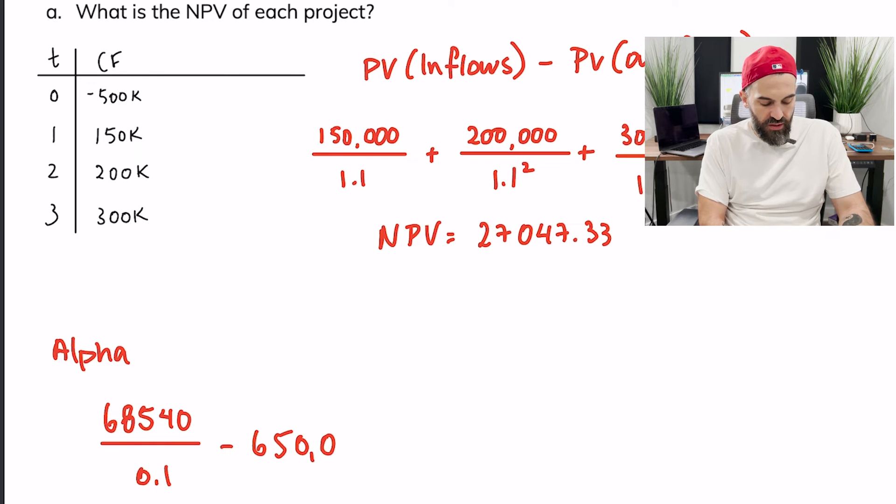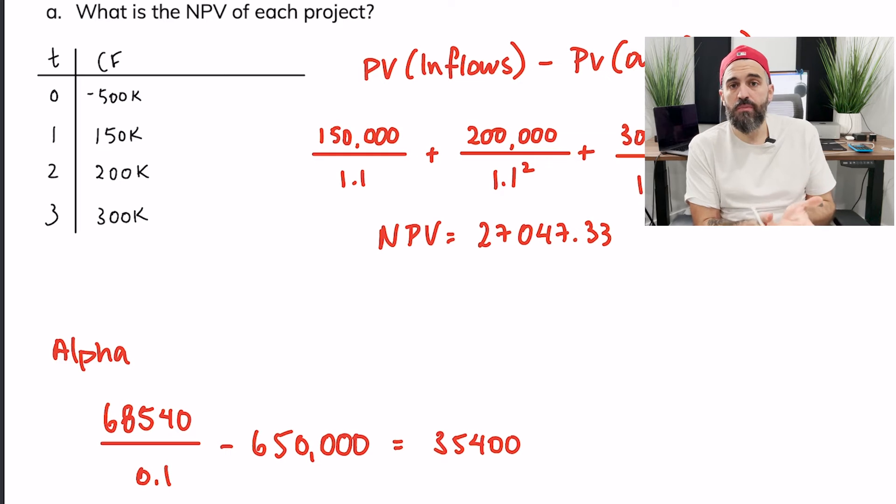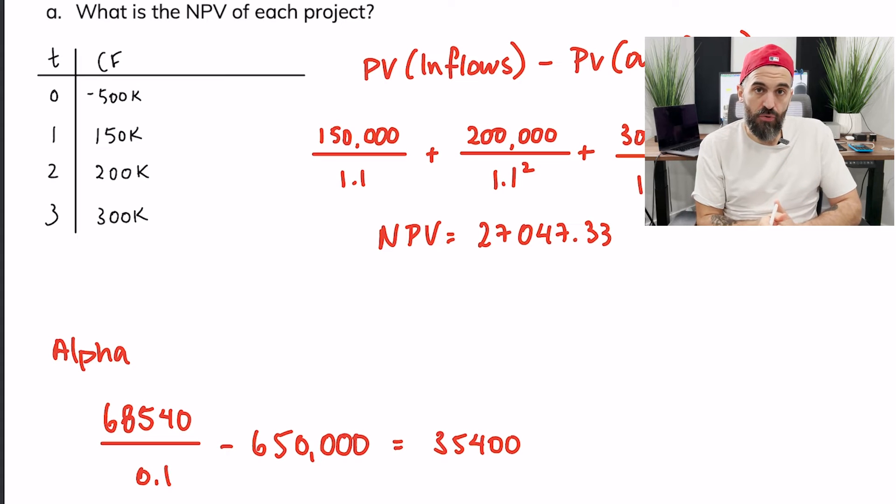Since you're going to be receiving $68,540 perpetually we just divide this by your required rate of return or your discount rate. I'm using the basic perpetual formula that'll give me the present value of my inflows minus $650,000 which is my outflow. So you'd end up with a net present value of $35,400.